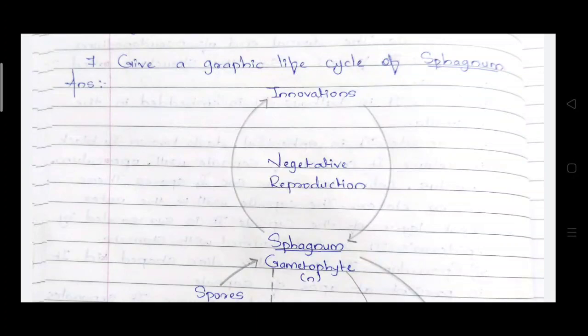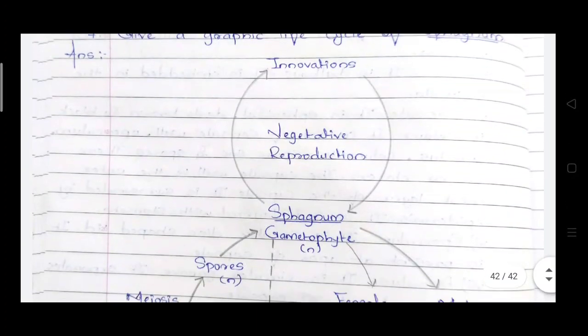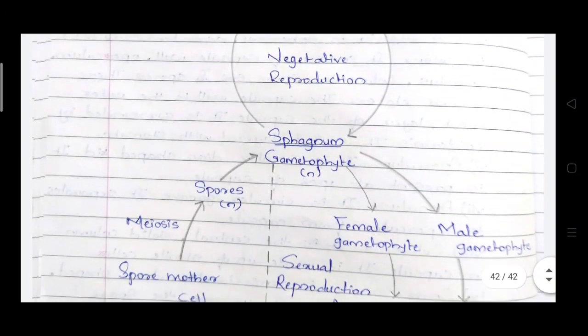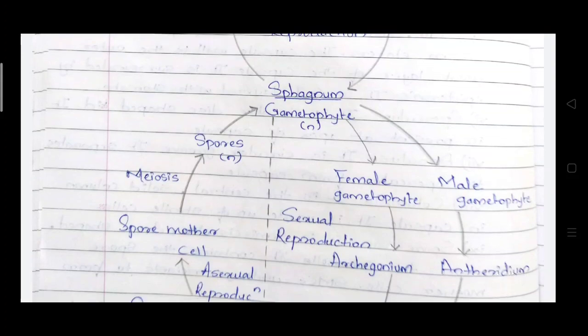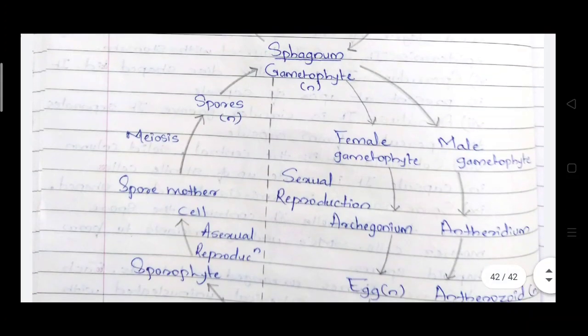Vegetative reproduction takes place in Sphagnum by innovations — that means special branches arise from the Sphagnum plant and they will grow as a new plant if there are any mechanical disturbances. So in Sphagnum, vegetative reproduction takes place by innovations.